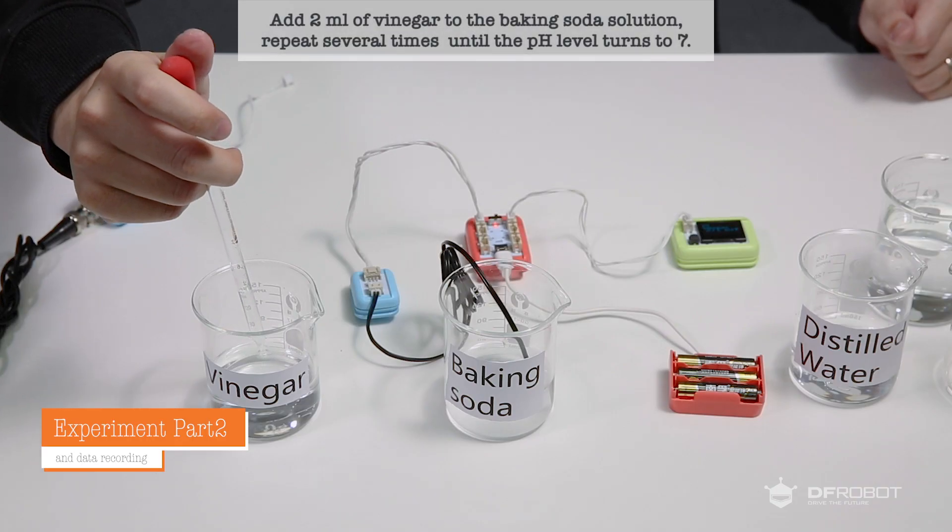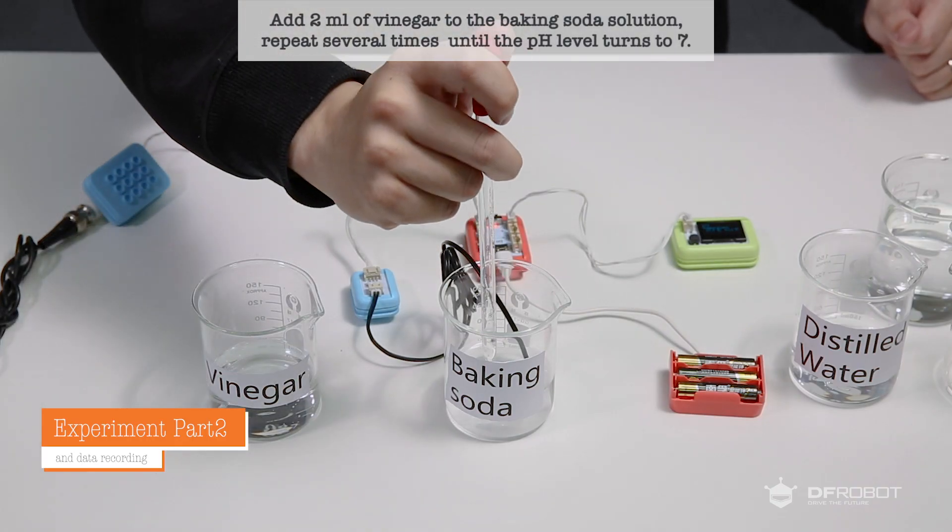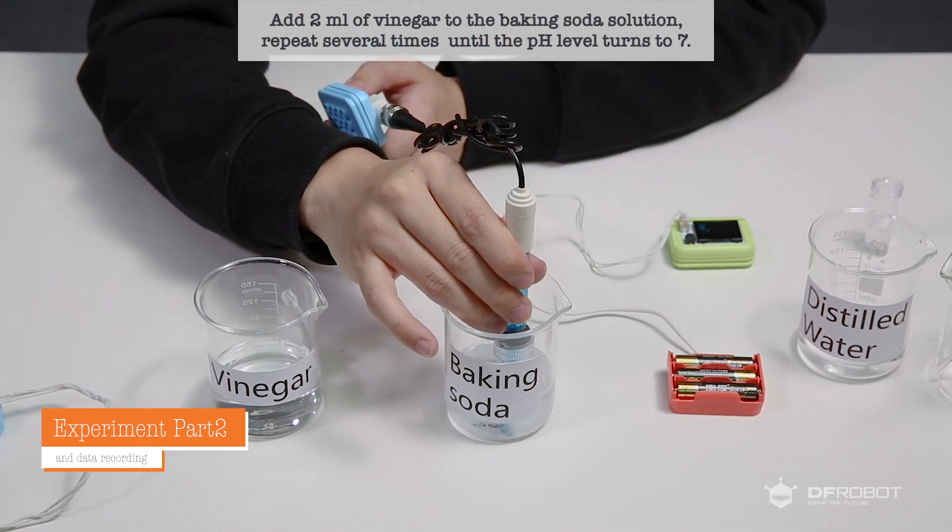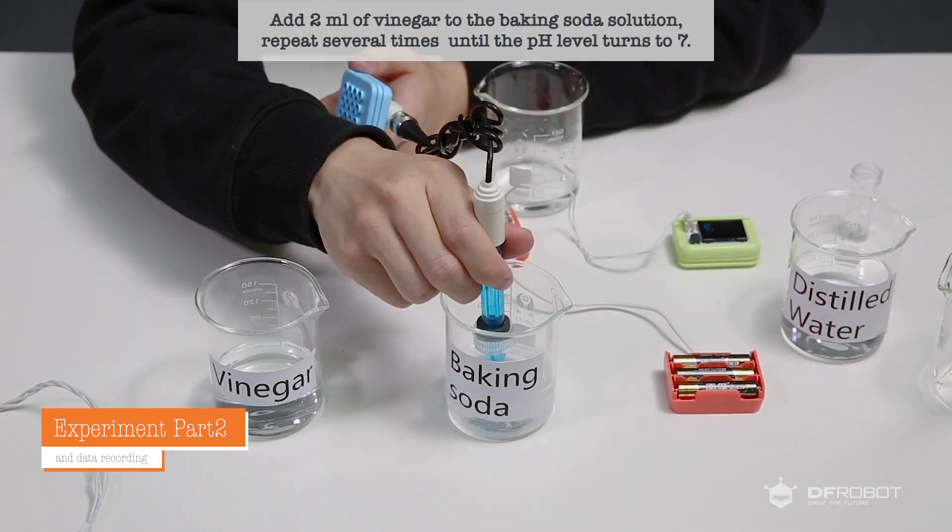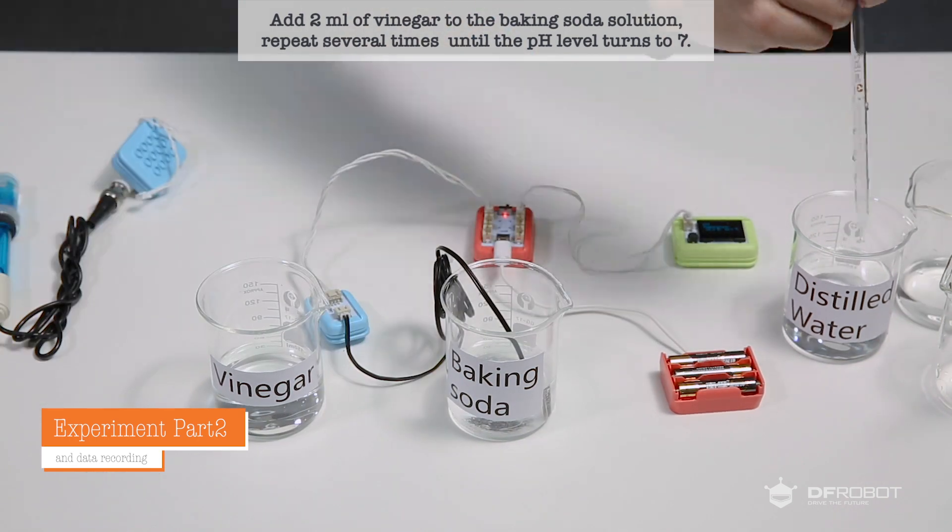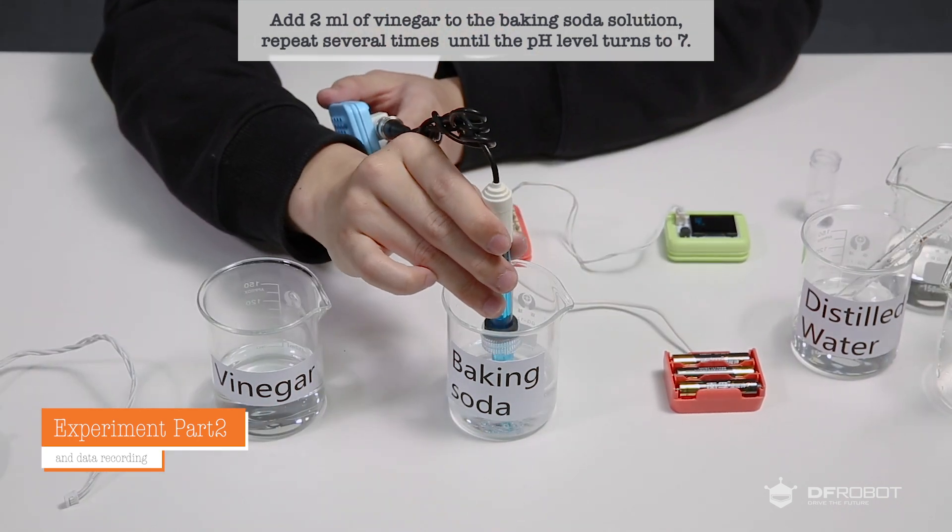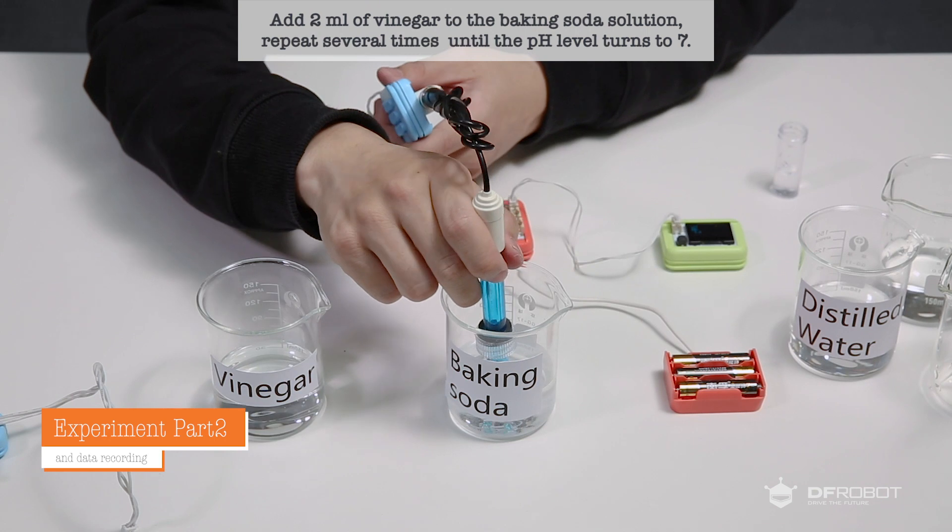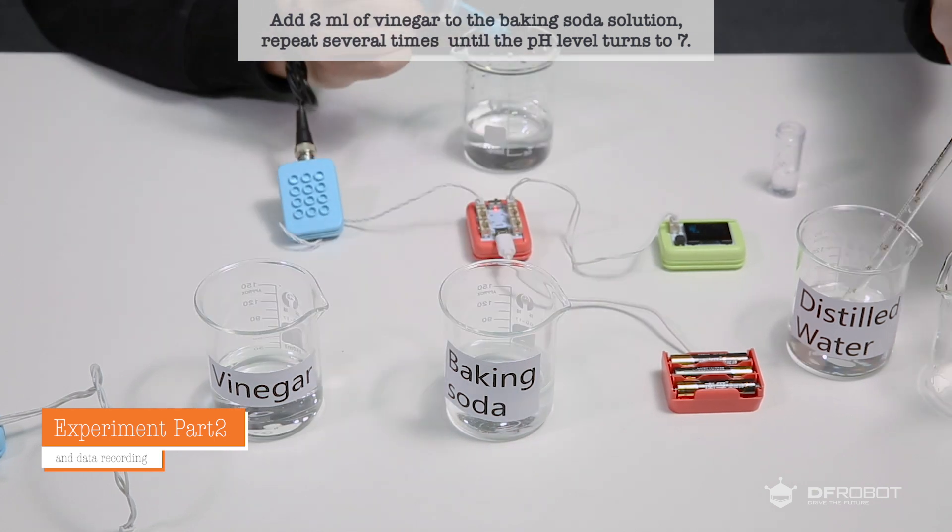Next, add 2 milliliters of vinegar to the baking soda solution. Repeat several times until the pH level turns to 7, where the neutralizing reaction is almost completed. Record these sets of data to see what happens to the temperature and pH level of the solution as different amounts of vinegar is added.